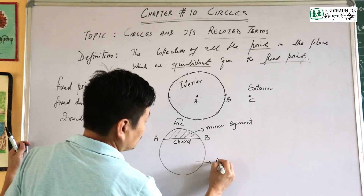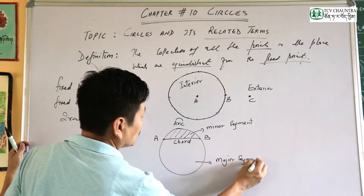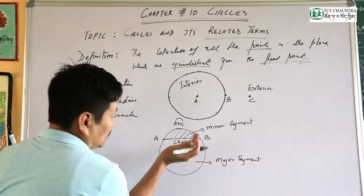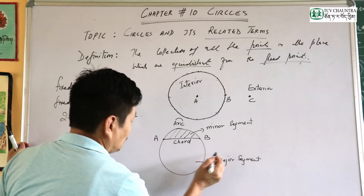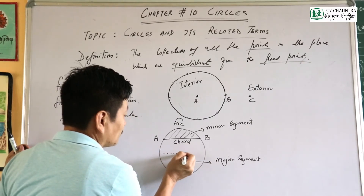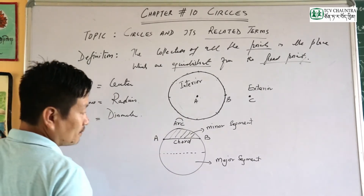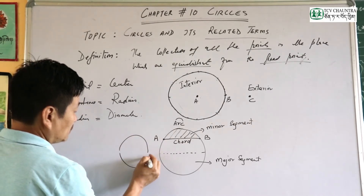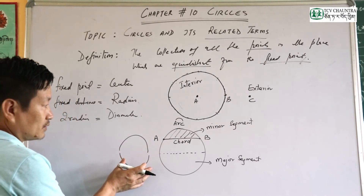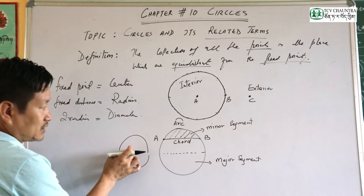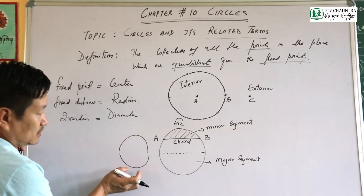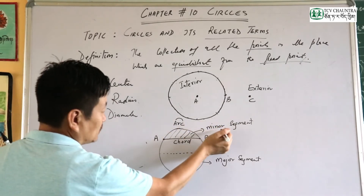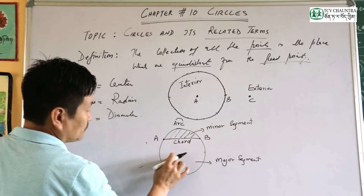The larger portion is called the major segment. The smaller portion is the minor segment. A chord divides the circle into two parts — the major segment and the minor segment. We also have a semicircle, which is when the chord is the diameter and divides the circle into two equal halves.